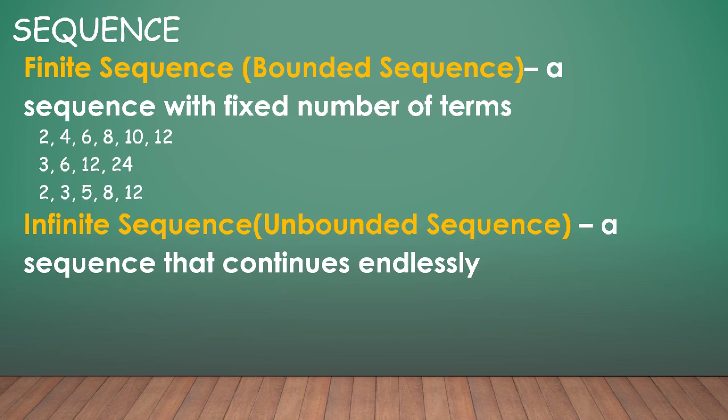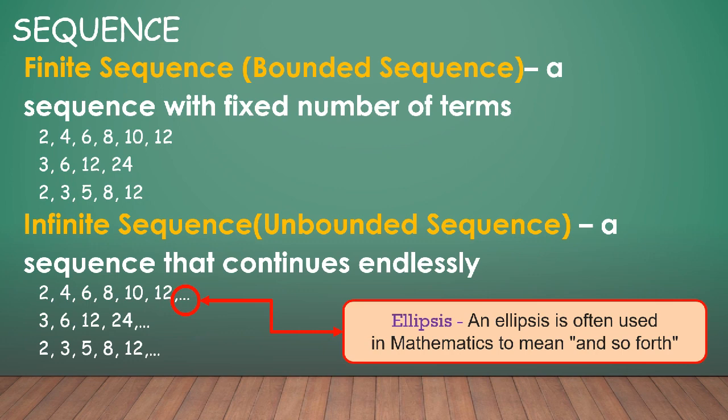Or you can also have infinite sequence which is also known as unbounded sequence. So from the word itself, infinite, meaning this sequence will continue endlessly. So for example, we have 2, 4, 6, 8, 10, 12 dot dot dot, 3, 6, 12, 24 dot dot dot, and 2, 3, 5, 8, 12 dot dot dot. So notice that these are almost the same with the finite sequence except for those dots which is known as the ellipses. An ellipses is often used in mathematics to mean and so forth. So this is 2, 4, 6, 8, 10, 12 and so forth, which mean that this will continue endlessly. That's an example of infinite sequence.